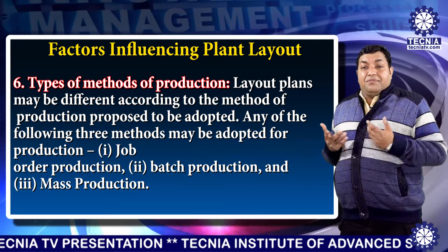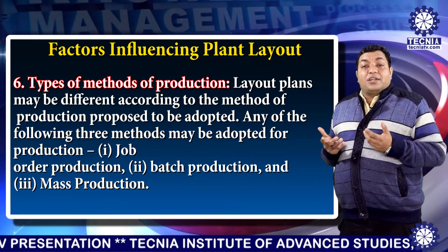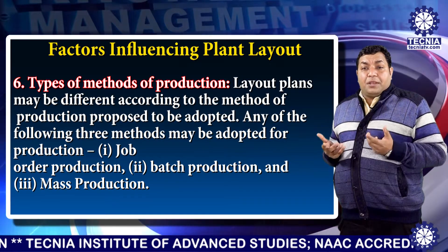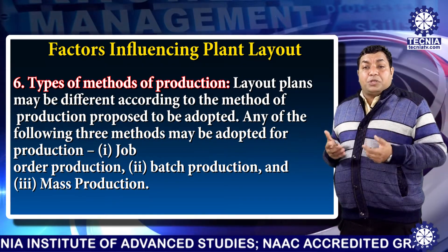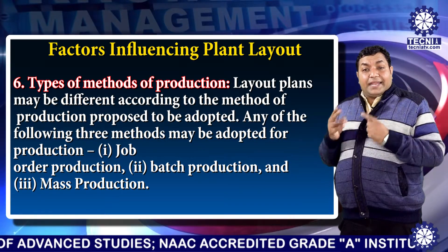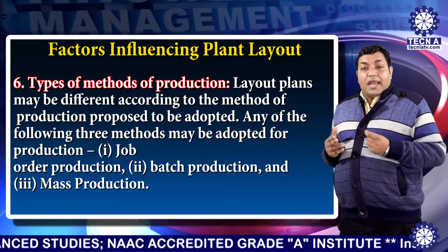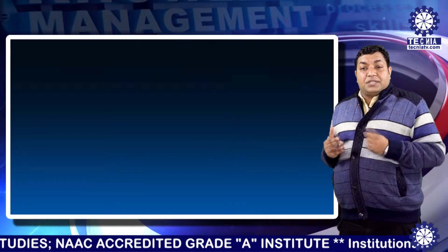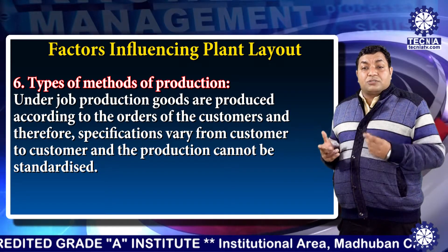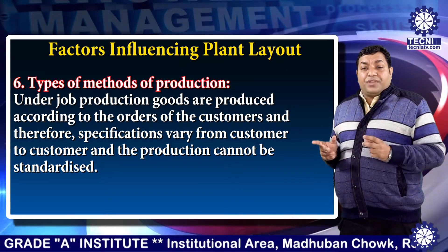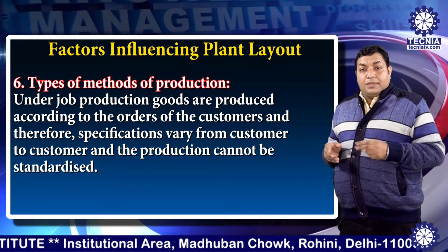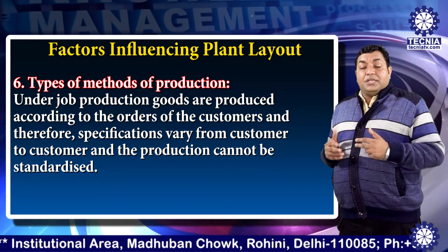The sixth factor is the types of methods of production. Layout plans may be different according to the method of production to be adopted. Any of the following three methods may be adopted: first is job order production, second is batch production, and third is mass production. Under job production, goods are produced according to the orders of customers, so specifications vary from customer to customer and the production cannot be standardized.